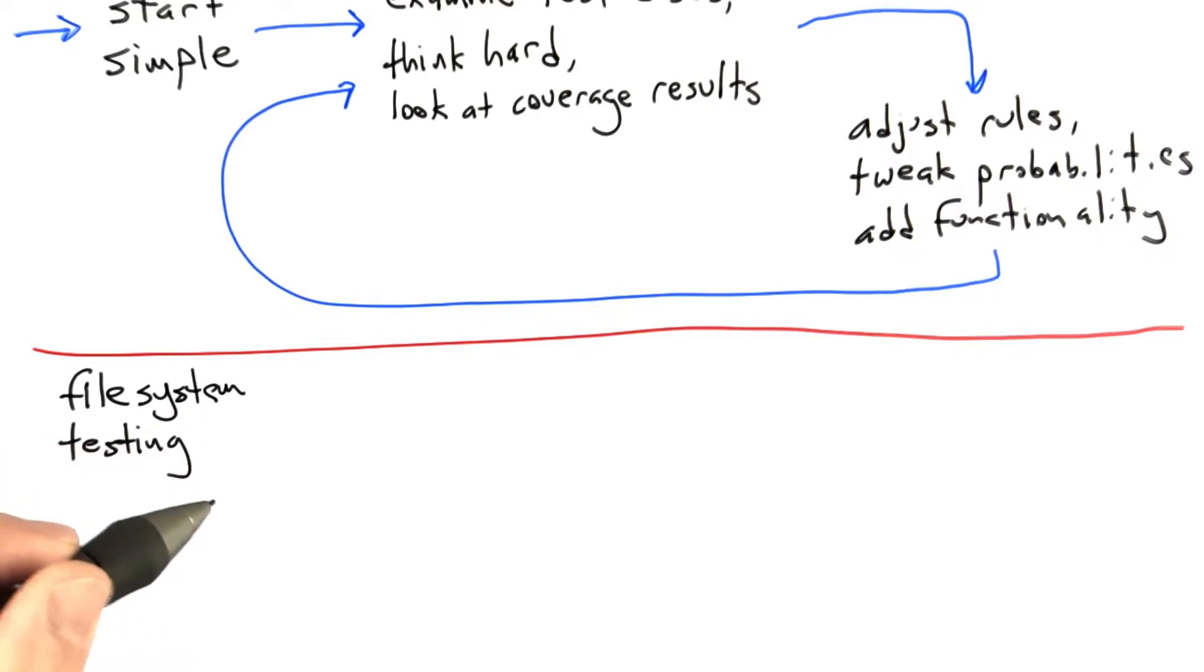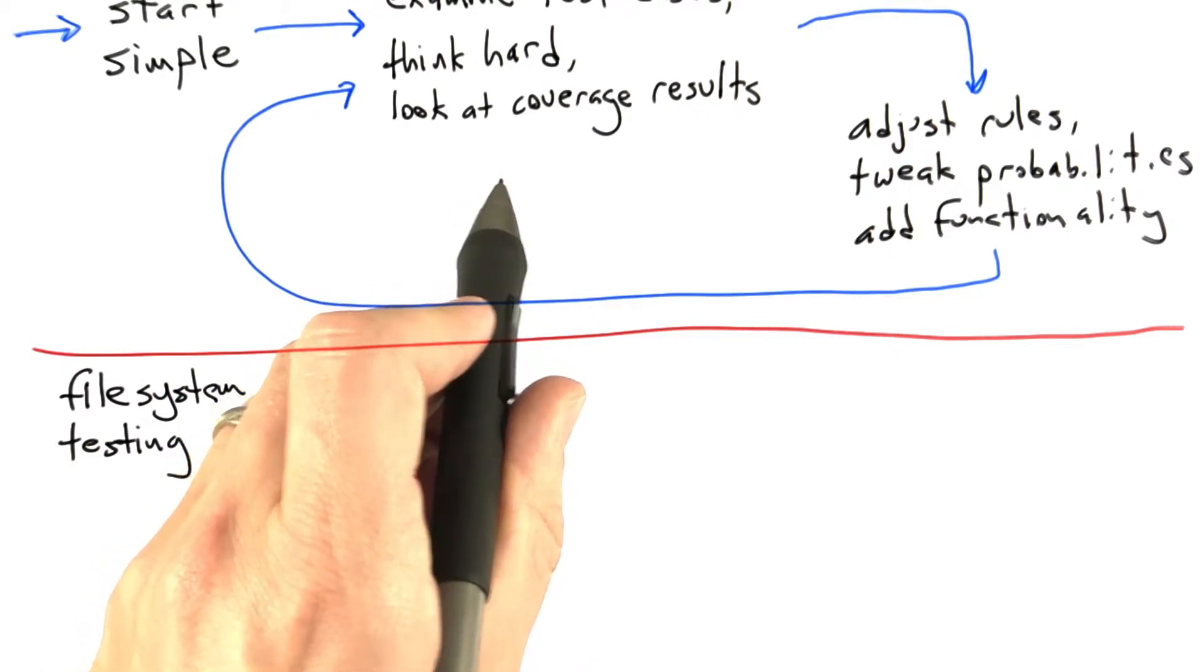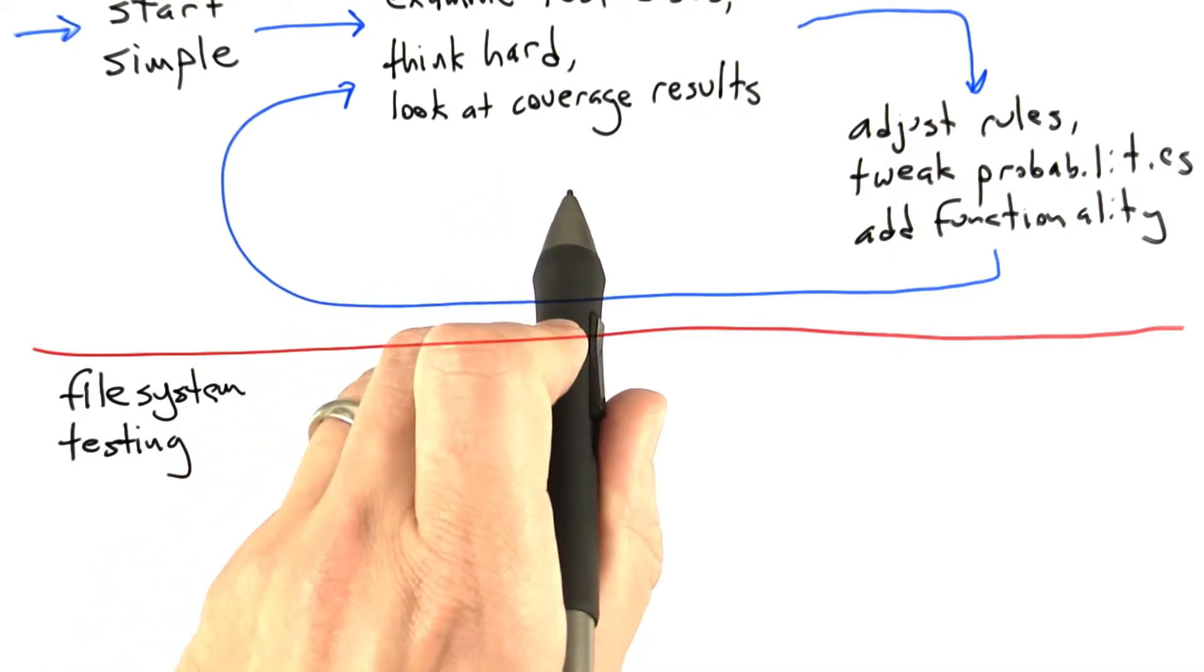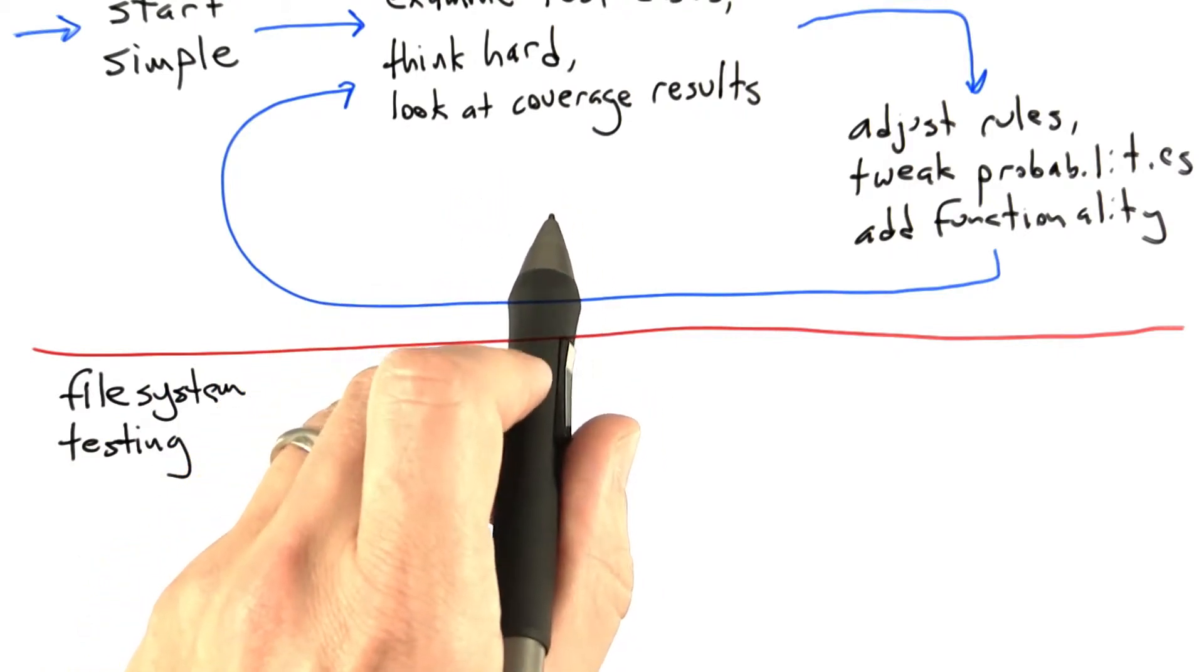If we start with a simple file system tester, we'll make a list of all the API calls we'd like to test. We can mount and unmount a file system, open and close a file, create a directory, remove a directory—make a list of all those kinds of functions, and basically just call them randomly with random arguments.